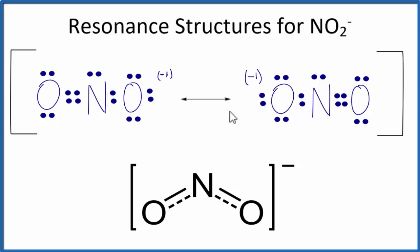So we don't have the double and the single, or the single and the double. We have an average, kind of like a 1.5 bond.